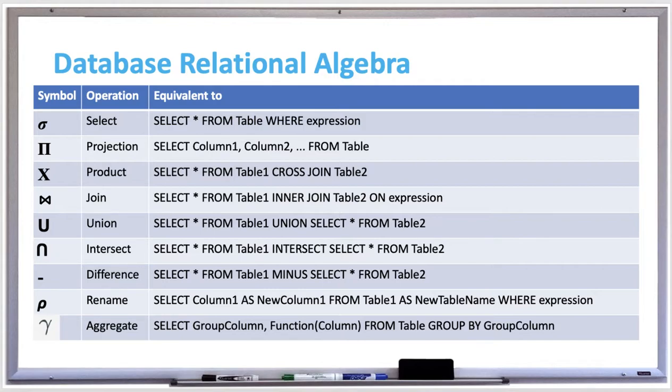Join operation is a product followed by a select operation. Union operation combines all rows of two tables into a single table assuming that the two tables are compatible. The intersect operation operates on two tables and returns only rows that appear in both tables. Difference operation removes all rows from the table that appear in the second table.